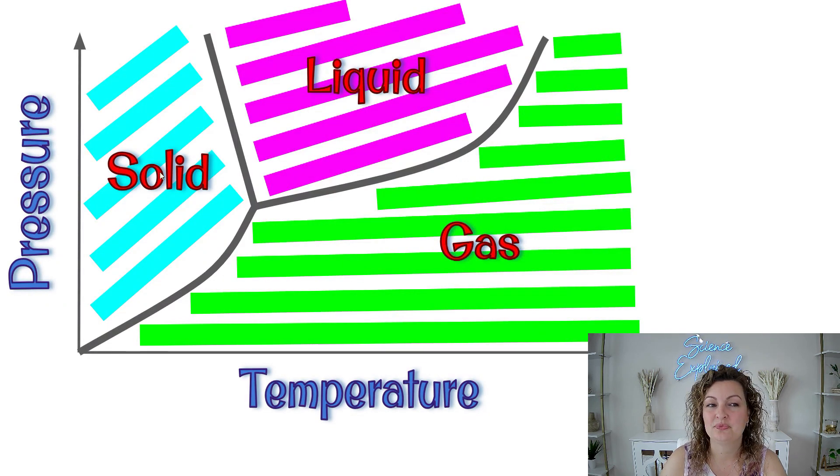Really what this is saying is if you fall in a certain temperature and pressure in this section, it's going to be a solid state of matter. In this section, it's going to be a liquid state of matter. And anywhere over here, it's going to be a gas.